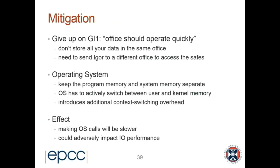The mitigation gives up on Good Intention One. You don't store all data in the same office. If the clerk needs to access the safes, they have to go to a different office entirely — I can't even ask about data in that other office. You completely separate kernel memory from user memory. This means the OS has to actively switch between user and kernel memory, introducing additional context switching. That's the price of the anti-Meltdown patches.